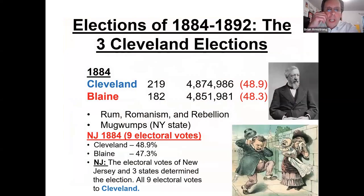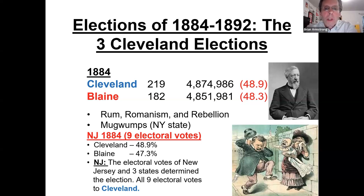Now we come to what I call the Cleveland elections — all very close. The first one against James Blaine, Cleveland squeaked out an electoral victory, but the popular vote was within just 20,000. The slogan against Cleveland was 'Rum, Romanism, and Rebellion' — meaning Democrats were for alcohol, Catholic, and connected with the South in the Civil War. It didn't work; Cleveland won. Cleveland also had a sex scandal where he'd had an affair and fathered a child — 'Where's my pa? Gone to the White House, ha ha ha' was a big song. Cleveland survived the scandal, and New Jersey went for Cleveland with nine electoral votes.